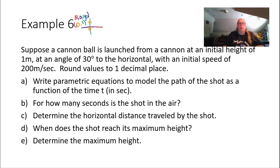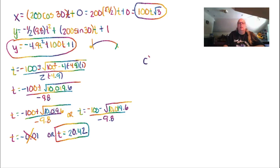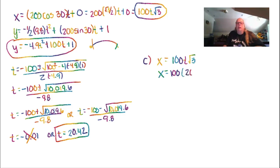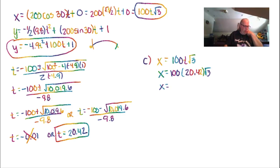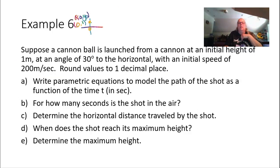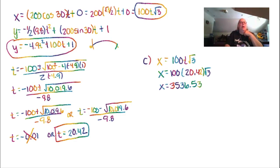For part C, the horizontal distance traveled: we plug t equals 20.42 into the x equation, giving x equals 100 times 20.42 times the square root of 3, which equals approximately 3,536.5 meters.